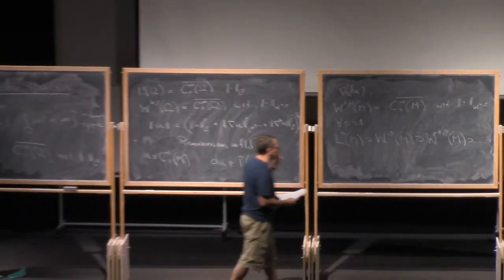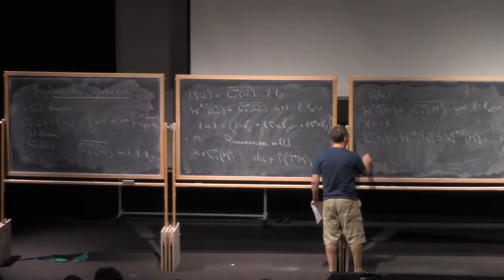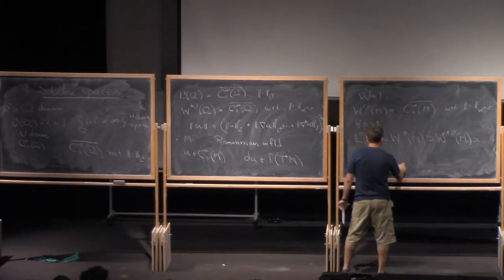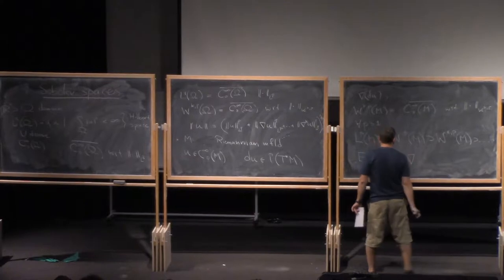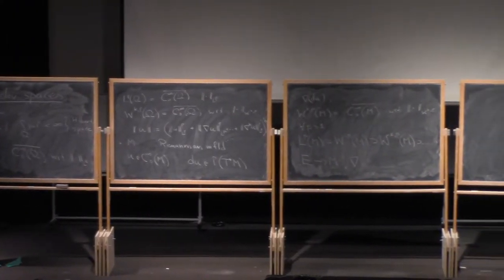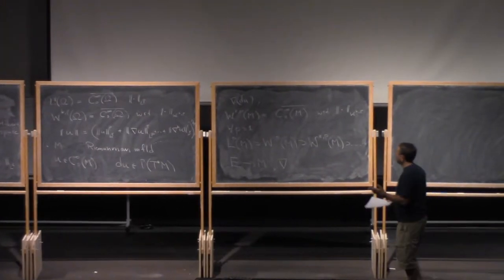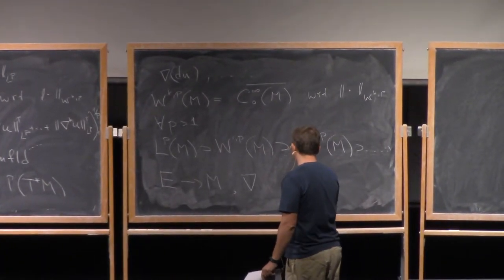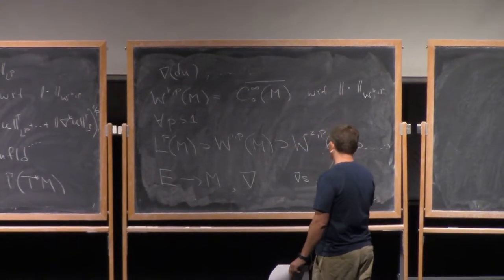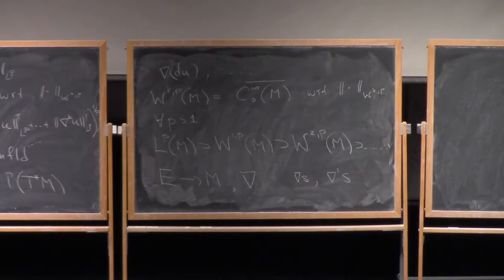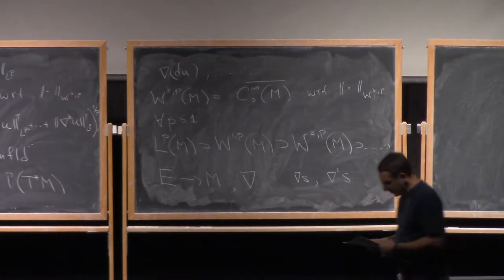So even more generally, what we could do, we could take a vector bundle E over M, together with a connection, and we could define the Sobolev spaces for sections of this bundle, just in the same way. If you have a section, we know what the derivative of S is, we know what the second derivative is, and we can integrate this. So Sobolev spaces are also defined for sections.